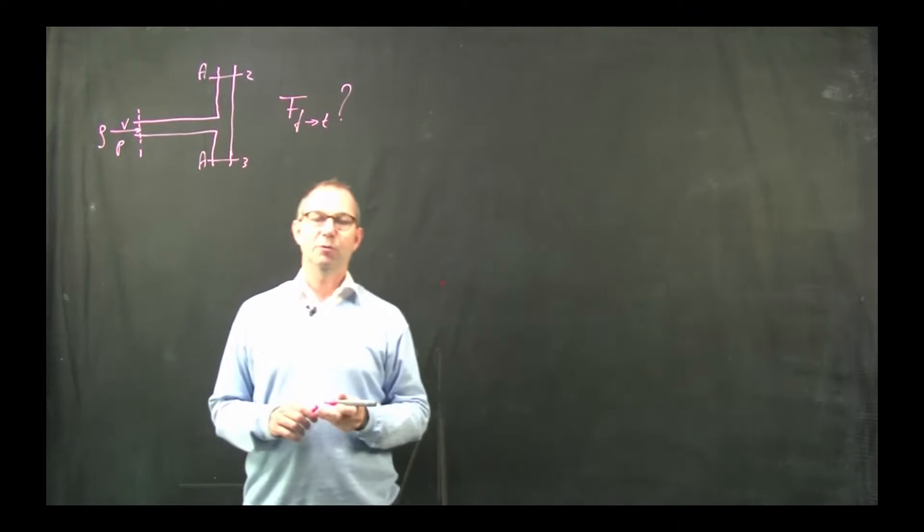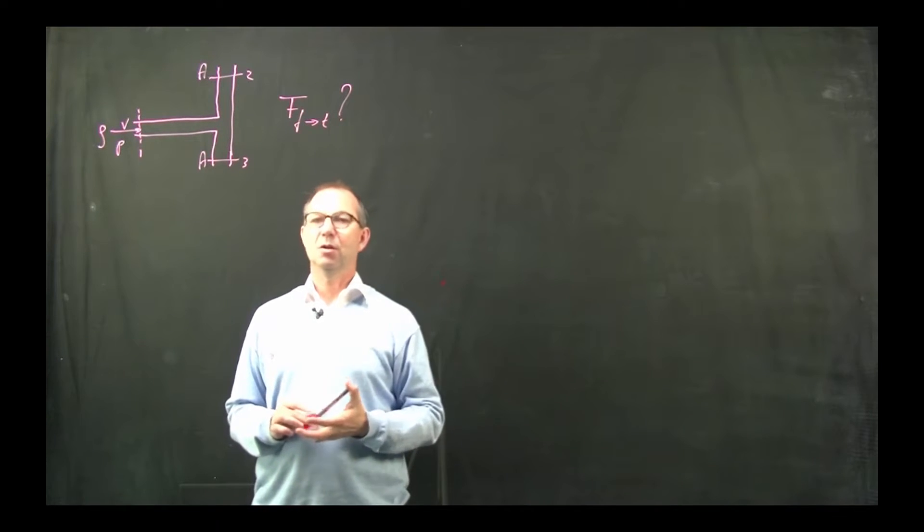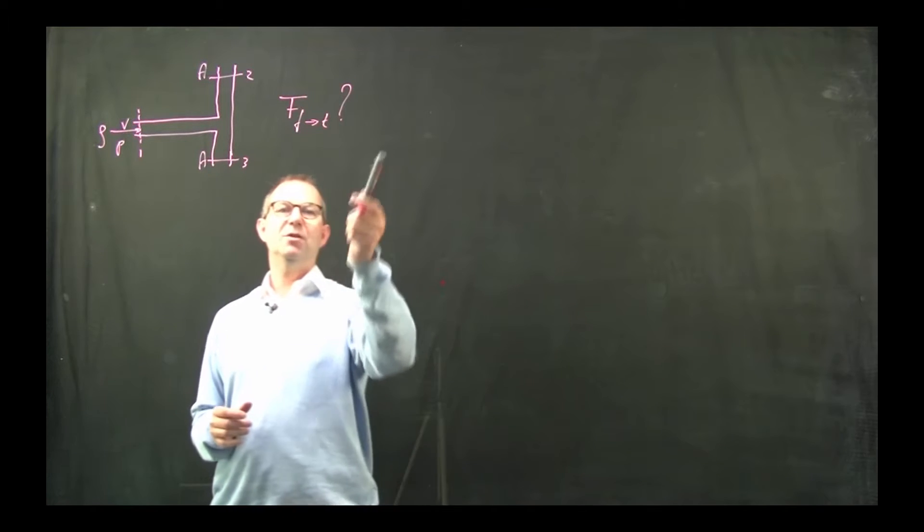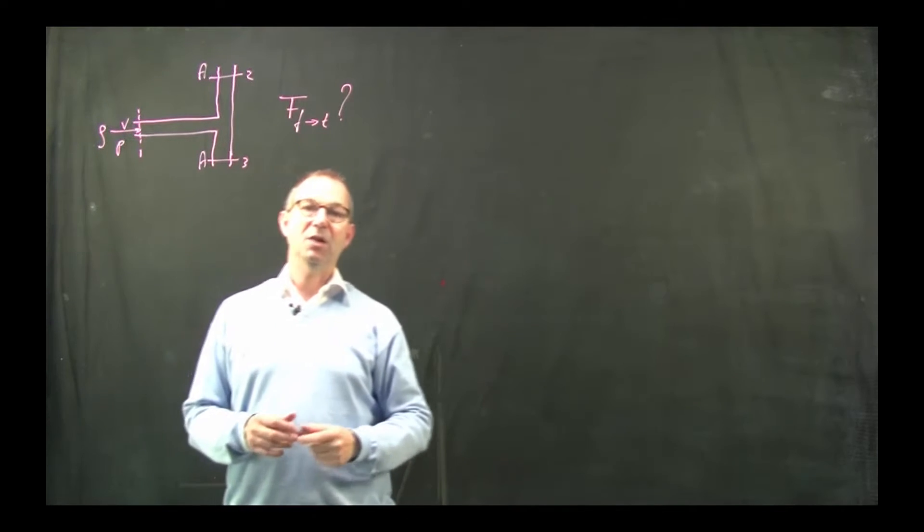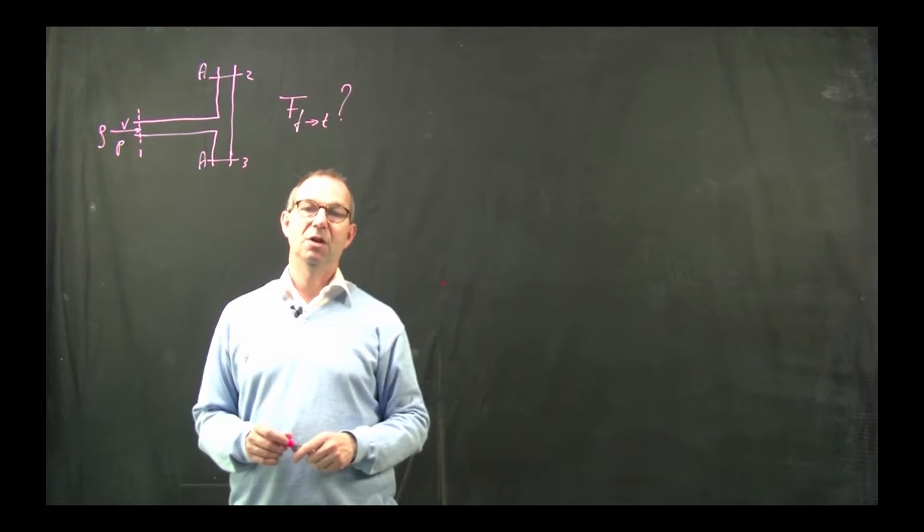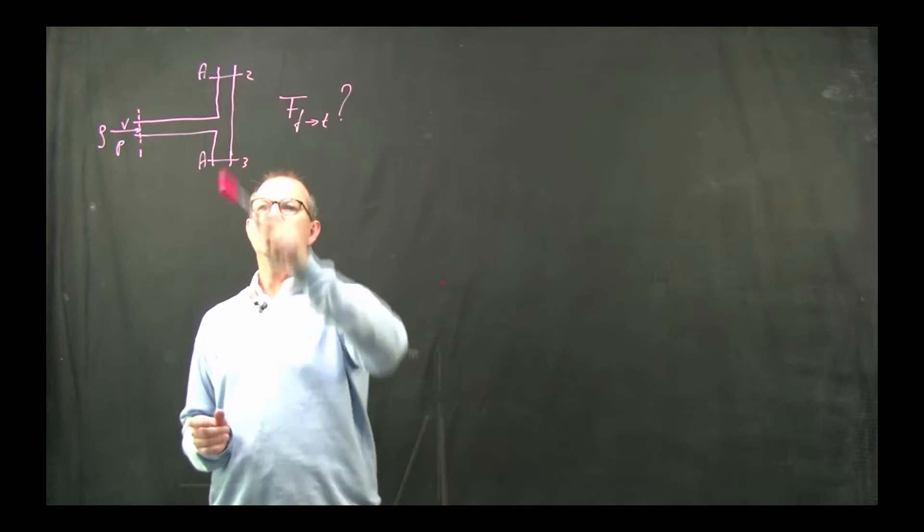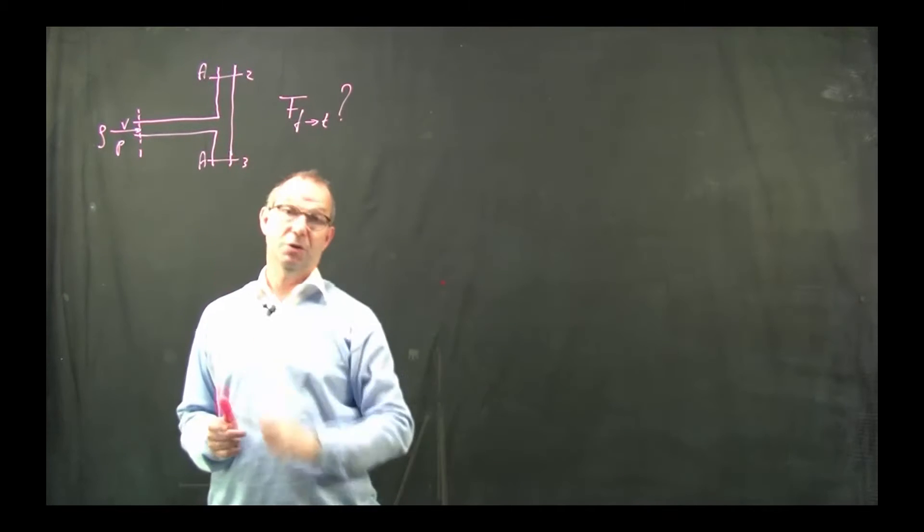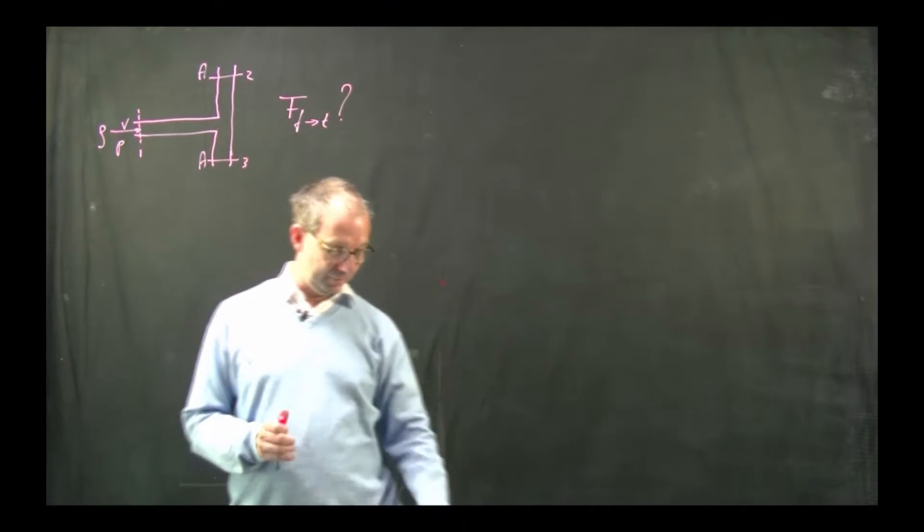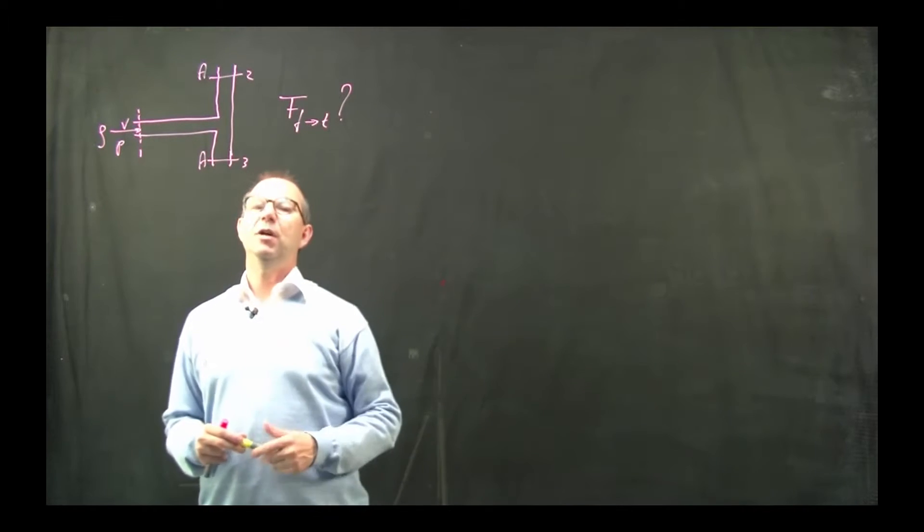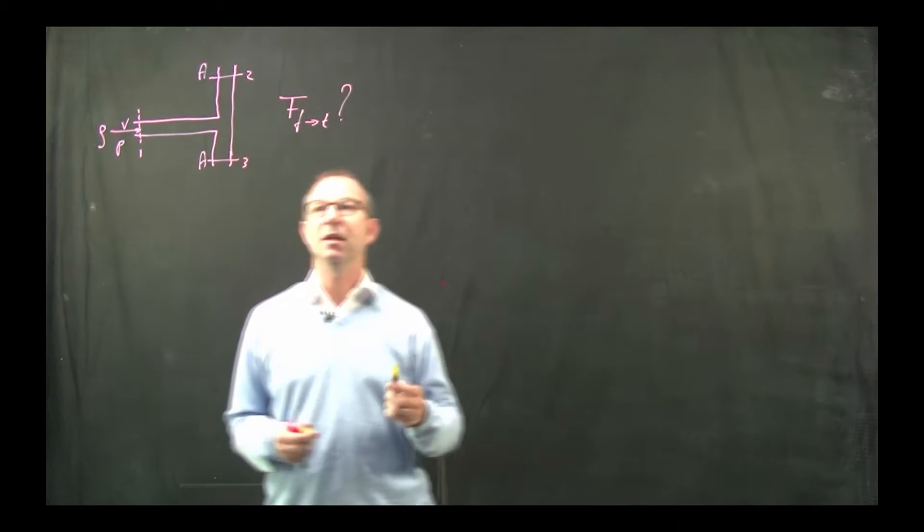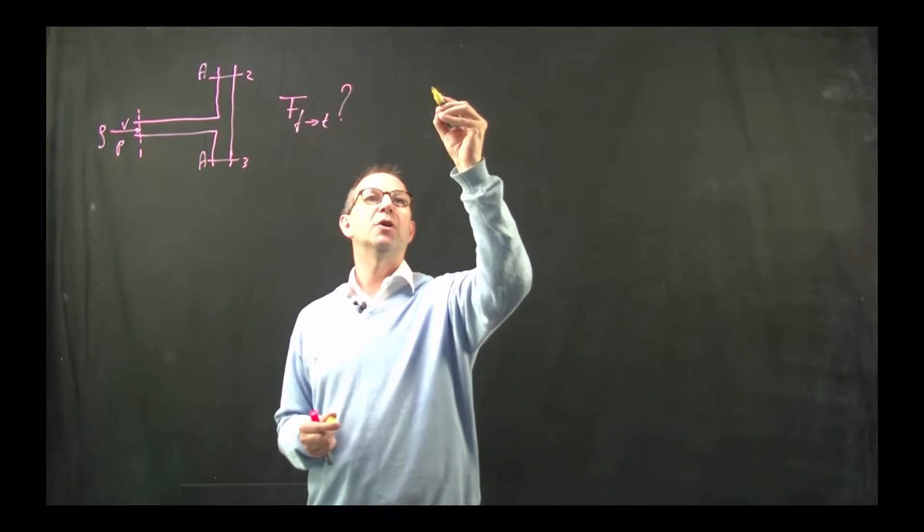We know from the lecture how to do this. We need to set up a momentum balance as the momentum balance has forces in it. But if we want to execute a momentum balance we need to know the flows as well as the pressures. To find the flows we can set up a mass balance and to find the pressure we can use a mechanical energy balance.